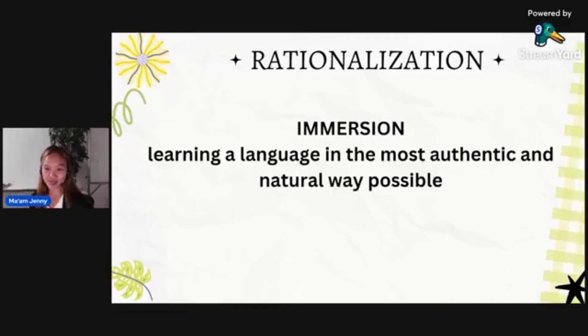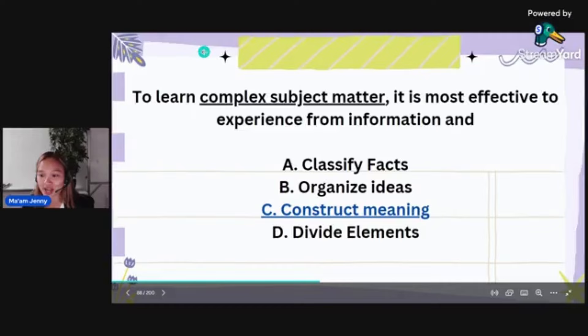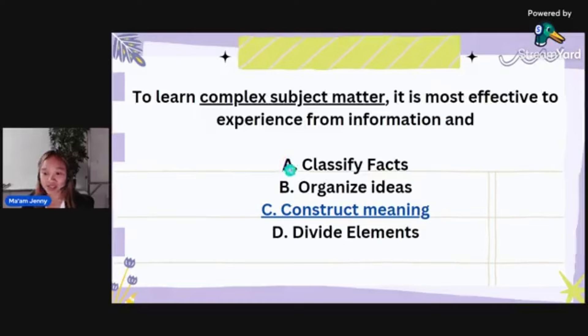To learn complex subject matter, it is most effective to experience information and: classify facts, organize ideas, construct meaning, or divide elements? The correct answer is construct meaning. Complex means higher level. Classifying, organizing, or dividing don't require that much depth. The answer is in the question — complex subject matter calls for constructing meaning. Letter C is correct.